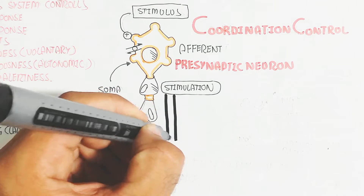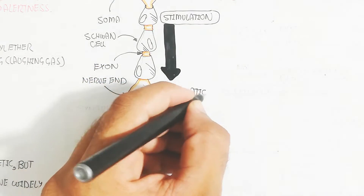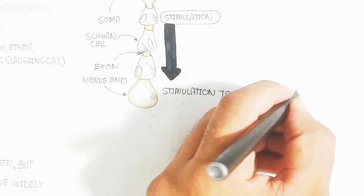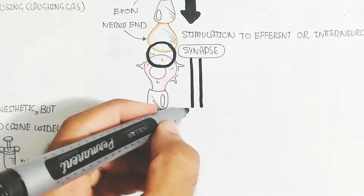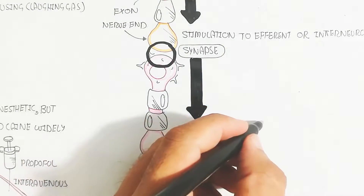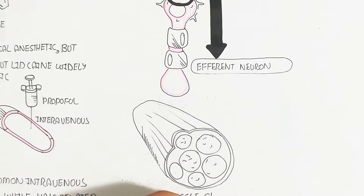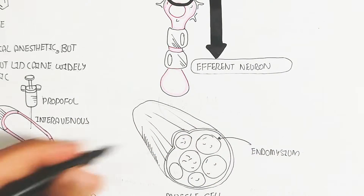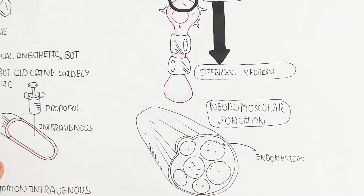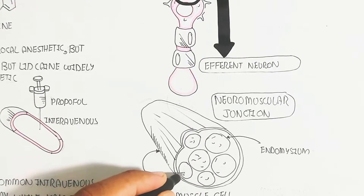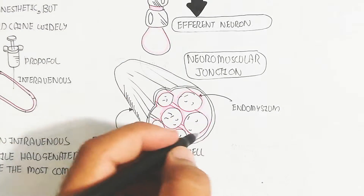After synapsing with the efferent neuron or interneuron, the motor neuron gives the signal — after integration in the brain — to the muscle for muscle movement. The efferent neuron is a motor neuron containing the neurotransmitter acetylcholine, which bonds with the muscle's neurotransmitter receptor. After this binding at the neuromuscular junction, the synapse between the nerve end terminal and muscle cells is formed.